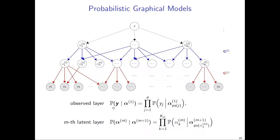Our conditions on each G_m can be translated to graphical requirements. Specifically, our condition requires that for each latent variable, no matter which layer it is in, it needs to have at least three pure children in the graph in order for this structure to be satisfied. As long as each latent variable has three pure children — and we can have some additional nodes that, for example, have two parents — we can prove the identifiability of the entire generative model.